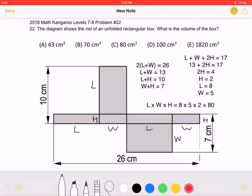Let's start by marking the length as L, the width as W, and the height as H. And again, this is the length, width, and height of the rectangular box when it is folded.